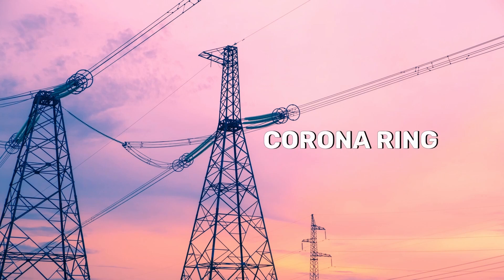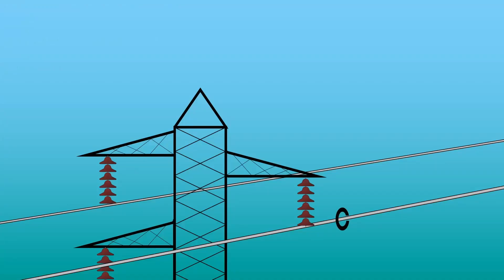Corona can also be decreased by using corona ring. It is electrically connected to the high voltage conductor encircling the points where the corona discharge may occur. This significantly reduces the electric field intensity at the surface of the conductor.